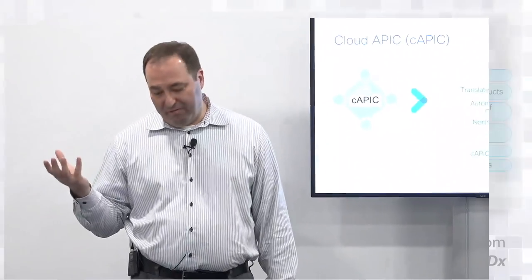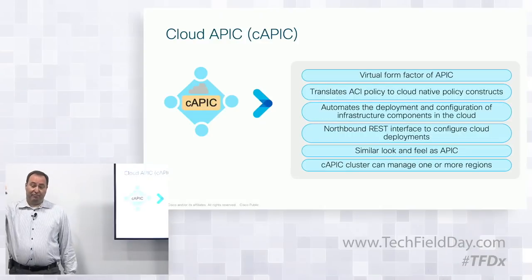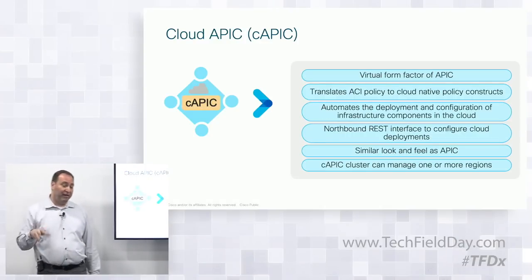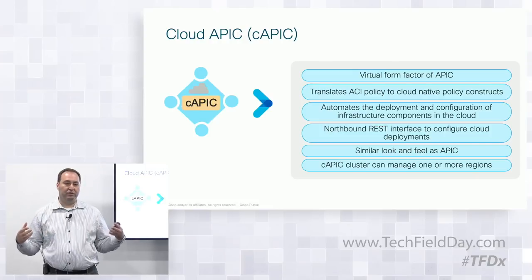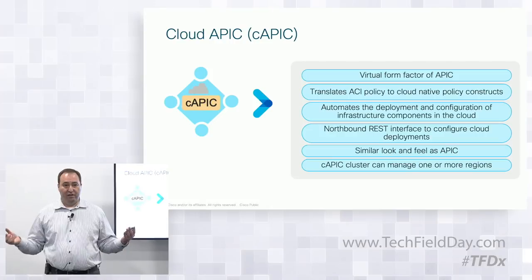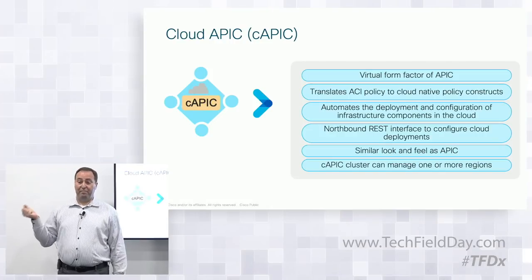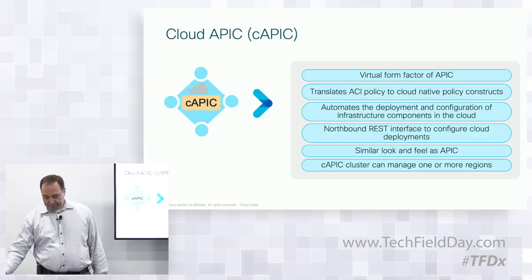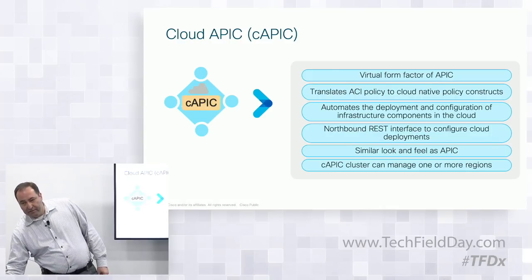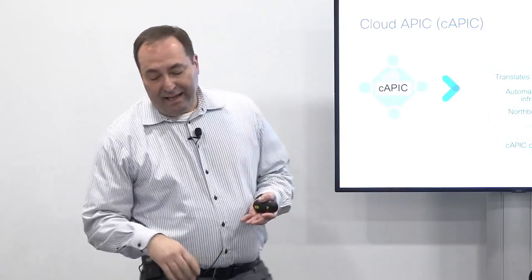The cloud APIC is really a virtual form factor deployment of APIC. It basically translates the policy from MSO into cloud constructs. The important thing is there are no agents involved for your instances — no magic. We use the native AWS constructs. Theoretically, if you threw the cloud APIC out, you could resume running your AWS infra the way you always ran it. It is the orchestration engine: it automates all the deployment and creates a northbound REST API.